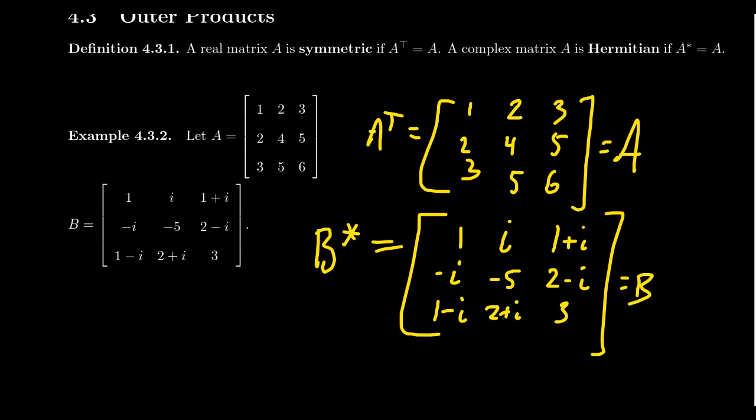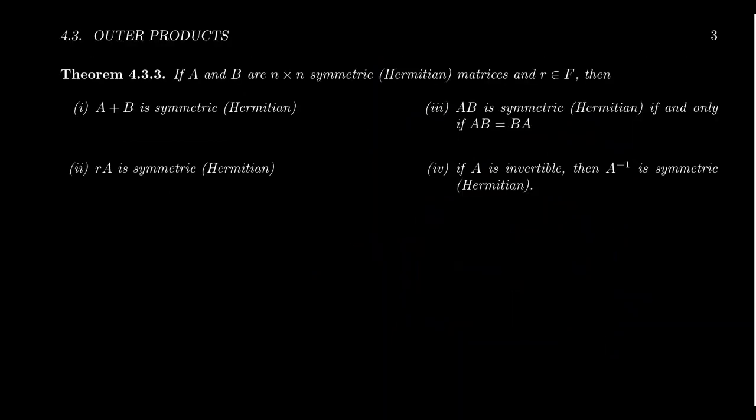The theory of symmetric and Hermitian matrices is going to be almost identical, because every symmetric matrix with real coefficients is technically a Hermitian matrix — when you take the conjugate transpose of a real matrix, that's identical to the transpose. We will primarily focus on the real ones, that is the symmetric ones, but be aware that there will nearly always be analogs for Hermitian matrices.